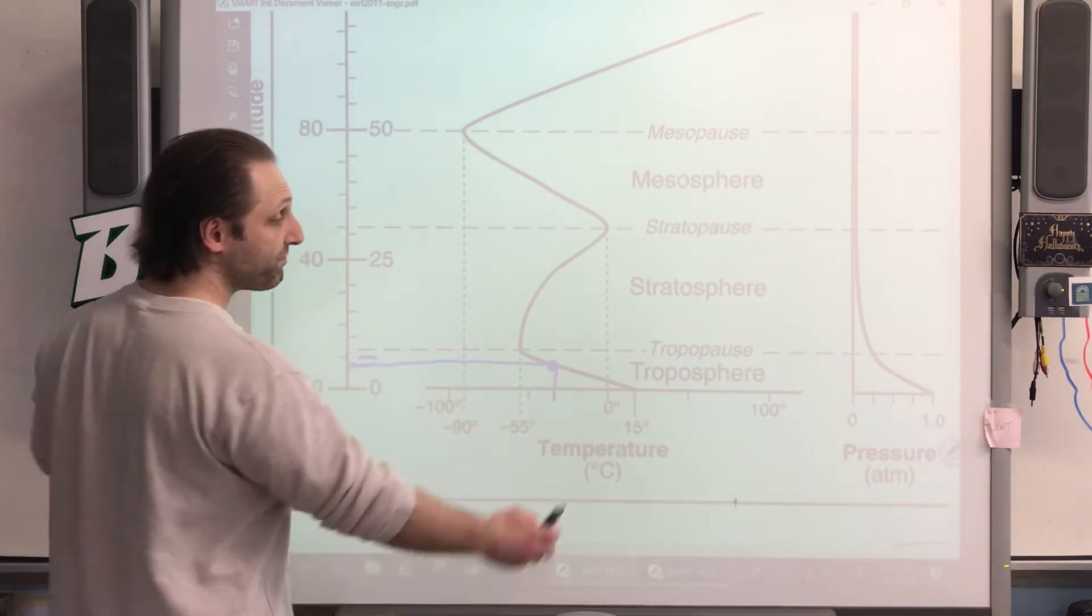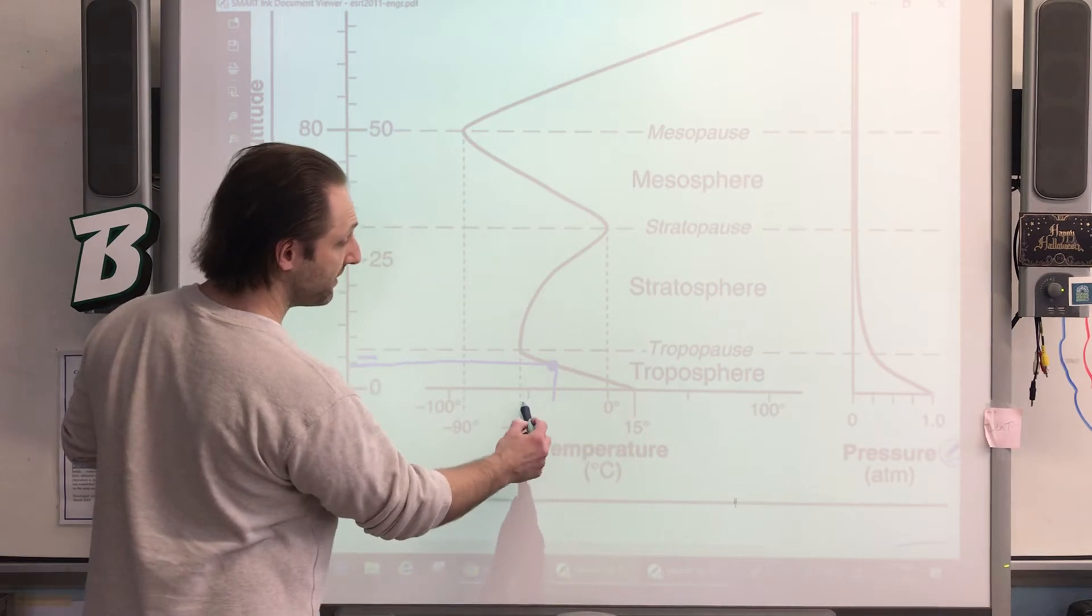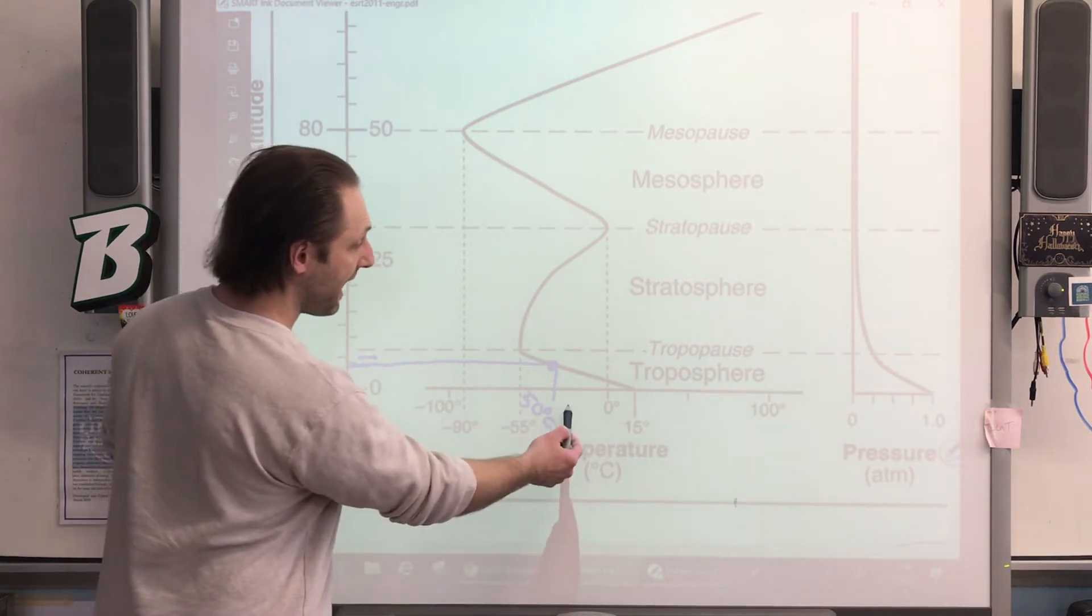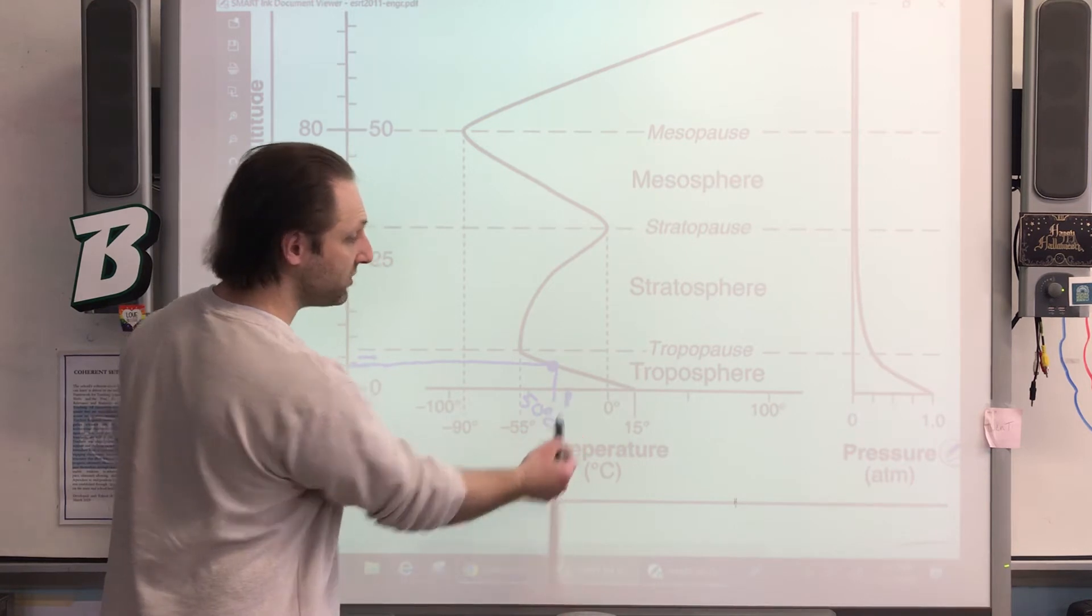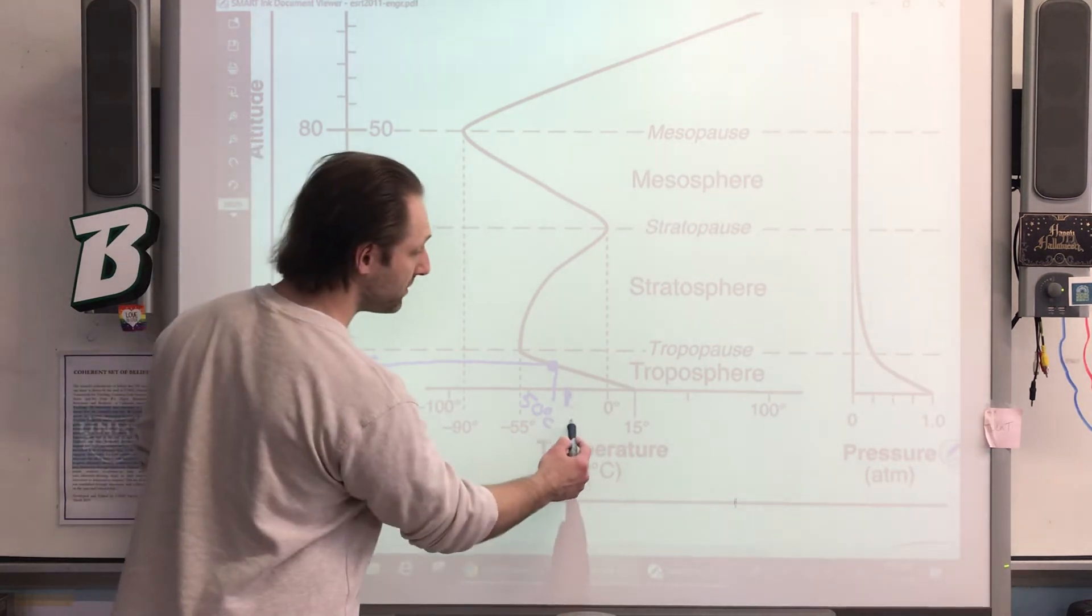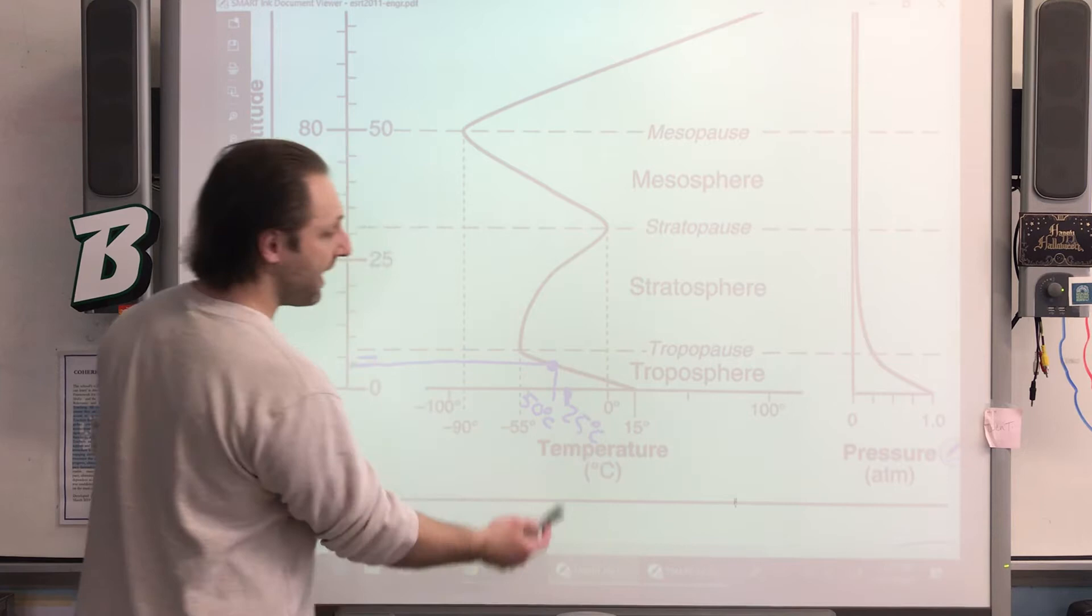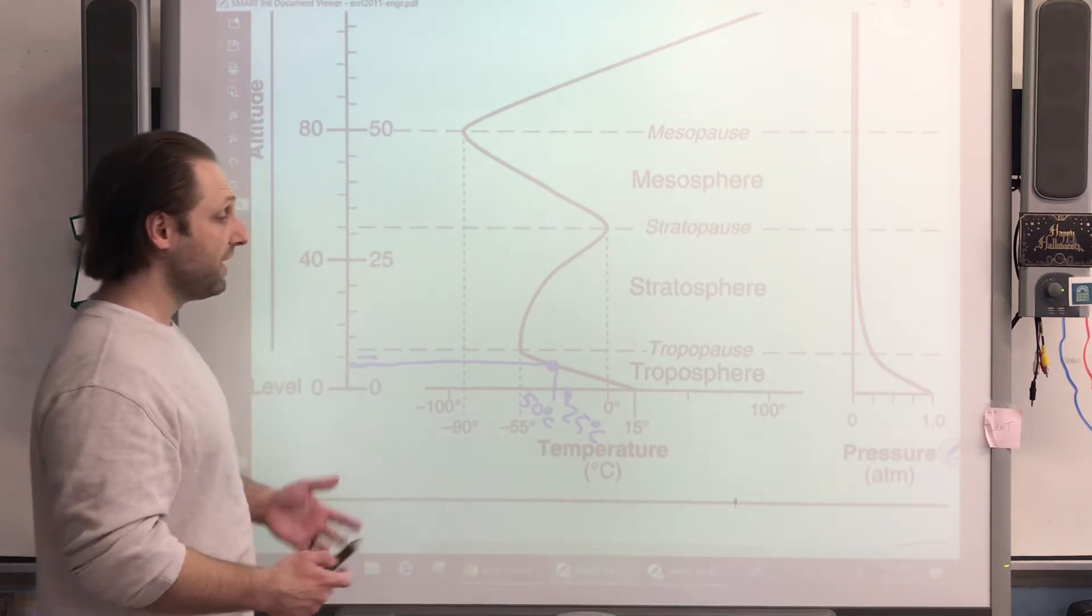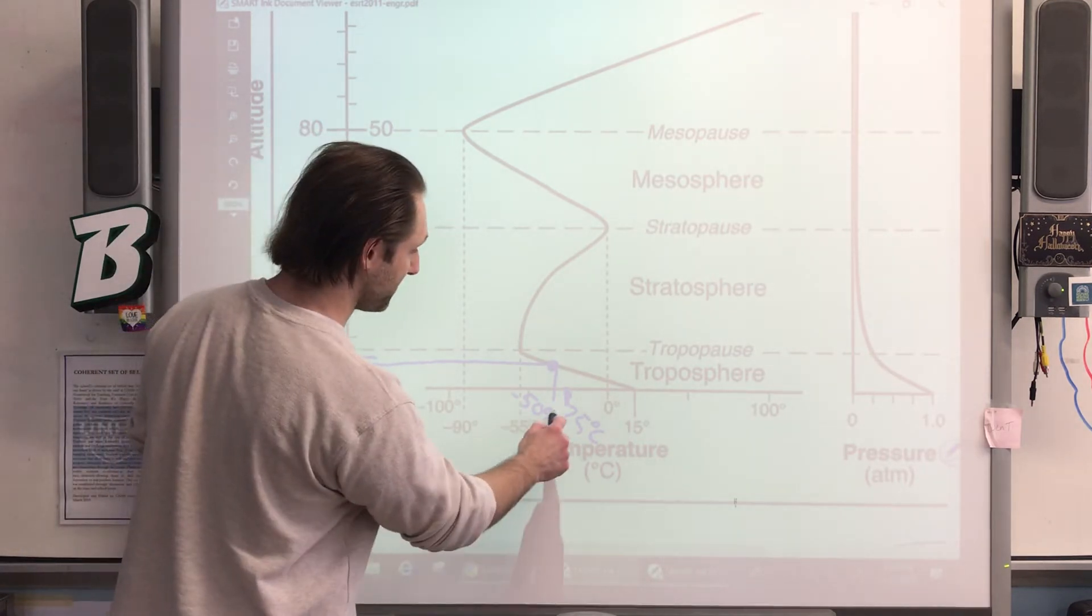It's a large scale, so if we have zero and this is 50 degrees Celsius, halfway is 25 degrees Celsius. This would probably be closer to 30 degrees Celsius, or I should say negative - these are all negatives on this side - so negative 30 degrees Celsius.